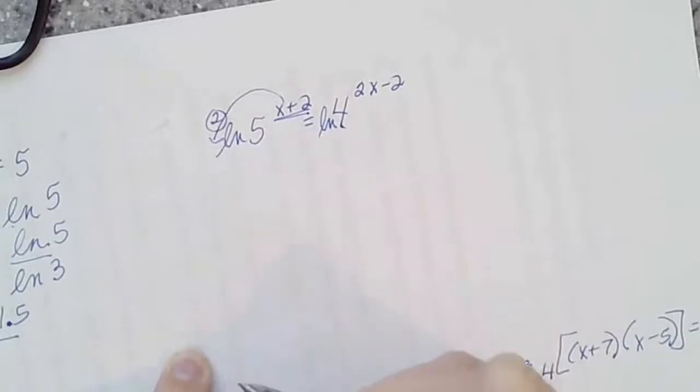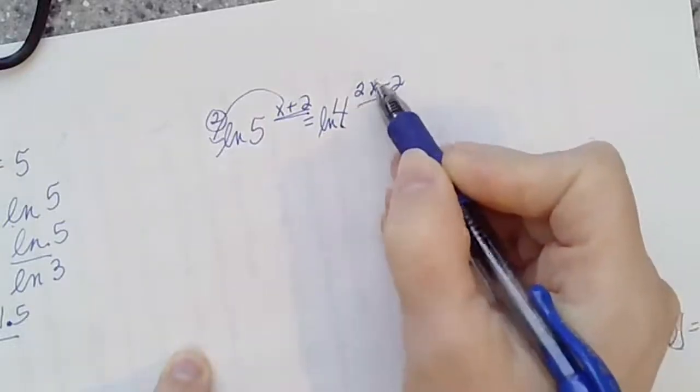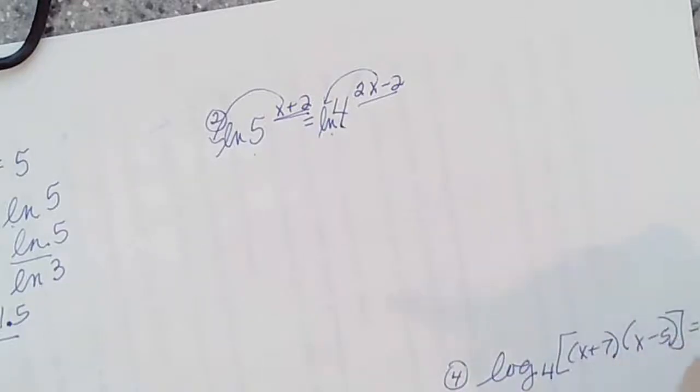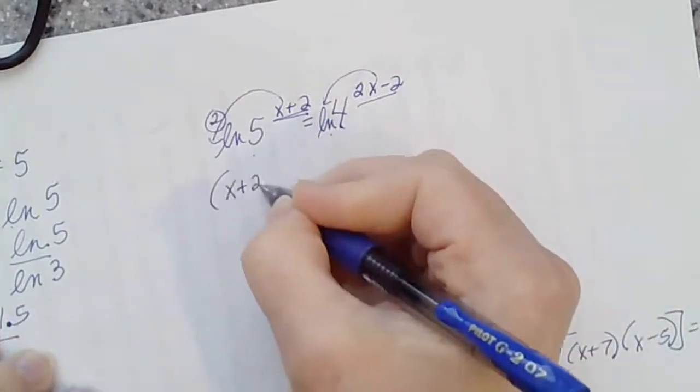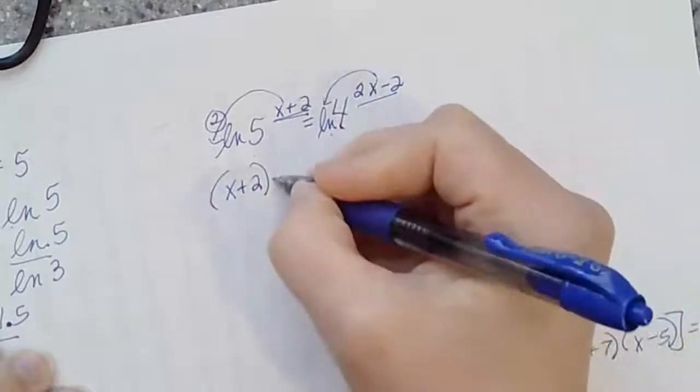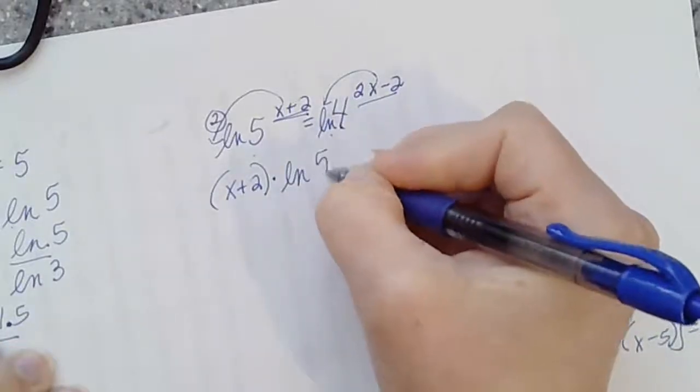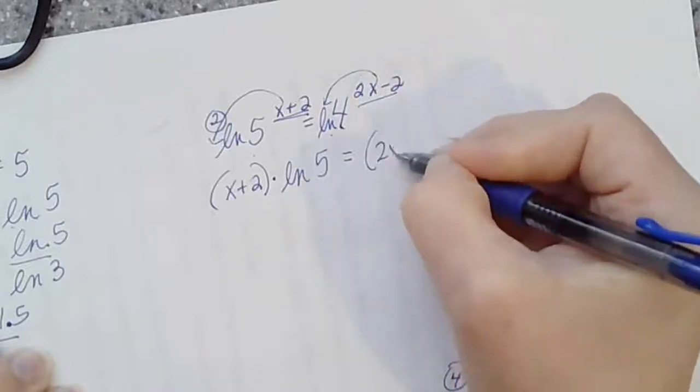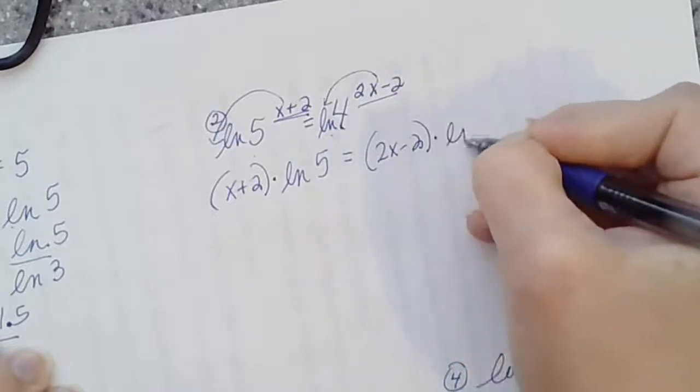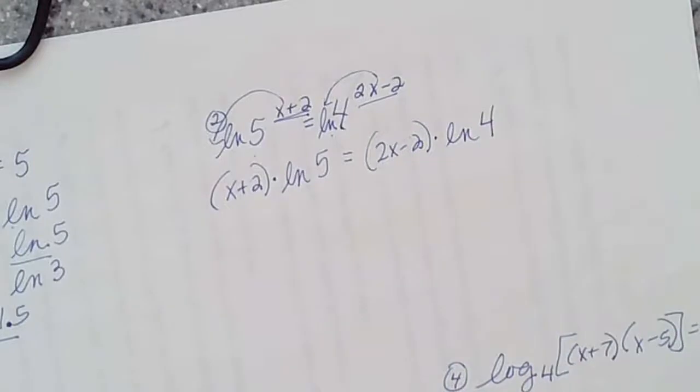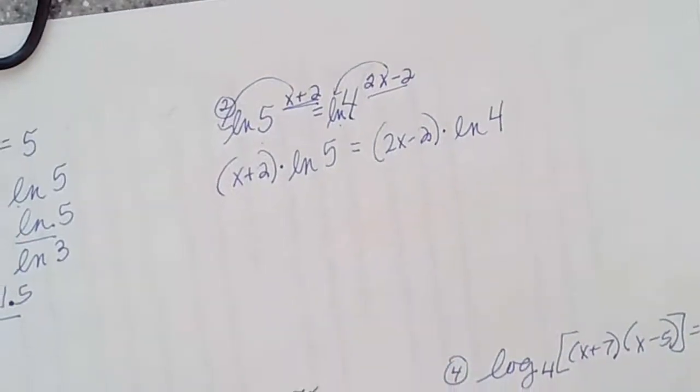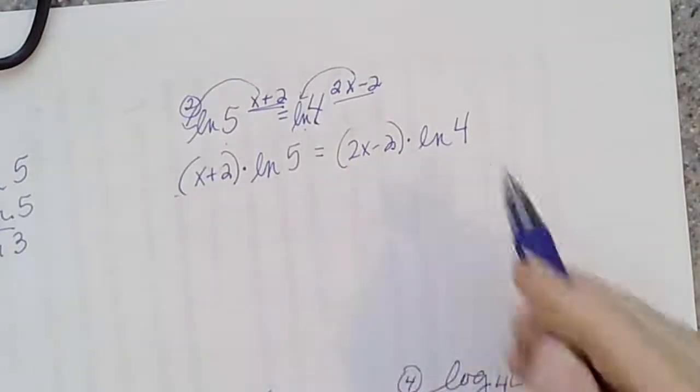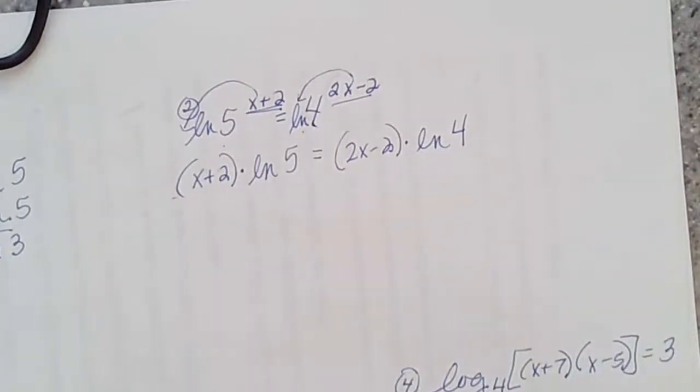So I'll do the same trick I just did over there. I'll take the logarithm of each side. By taking the logarithm, that enacts the log rules, which says your exponents then come down as multipliers. So by taking the log, and it could have been the ln log or the log log, they're both logarithm rules, that brings that exponent, x plus two, I will put it in a parenthesis to keep it intact, times ln five equals this exponent 2x minus two times ln of four.